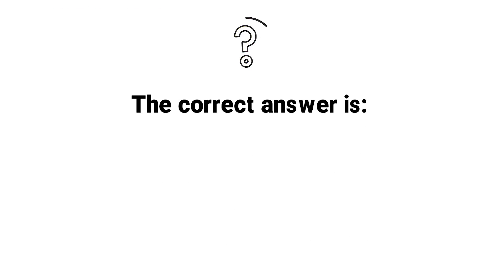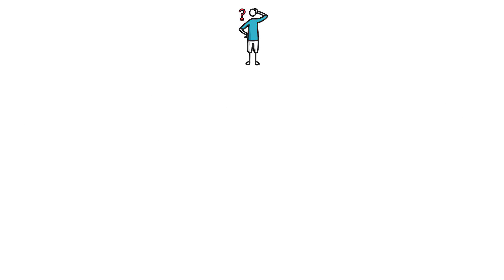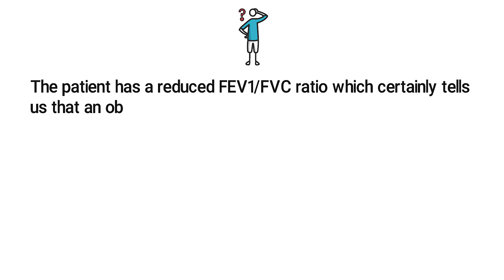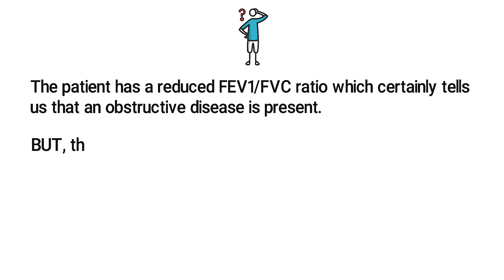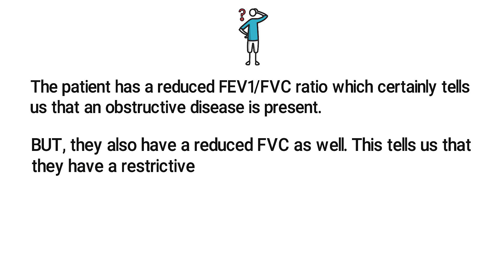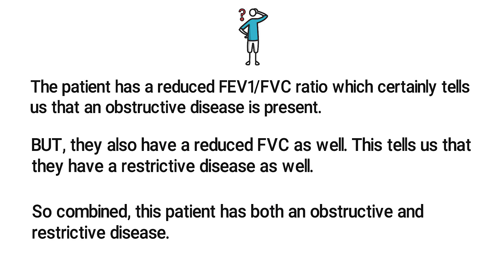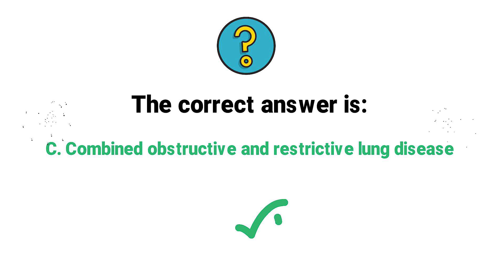The correct answer is C, combined obstructive and restrictive lung disease. The patient has a reduced FEV1 to FVC ratio, which indicates an obstructive disease is present. They also have a reduced FVC, which indicates a restrictive disease. So combined, this patient has both an obstructive and restrictive disease — the correct answer is C.